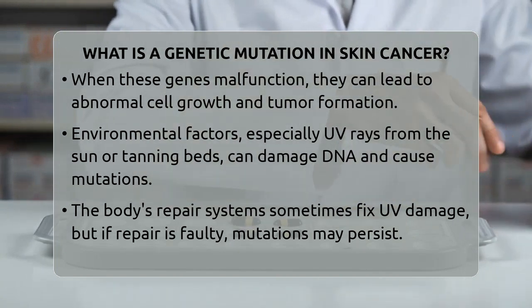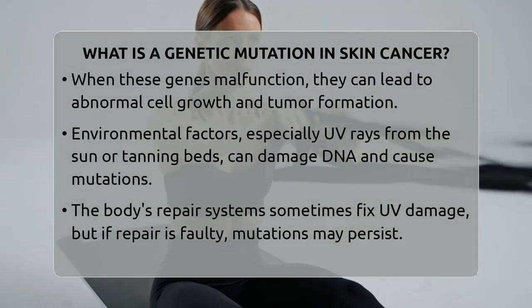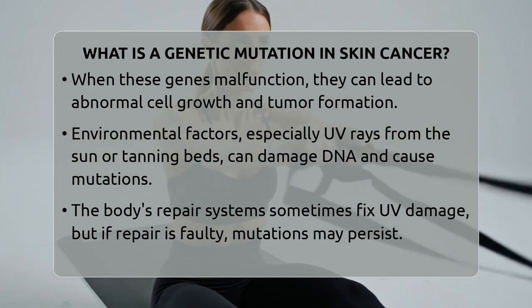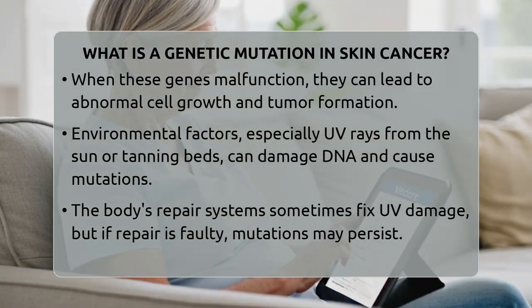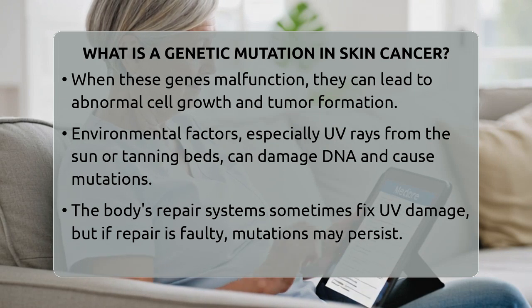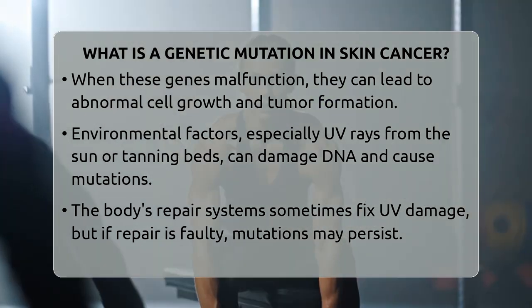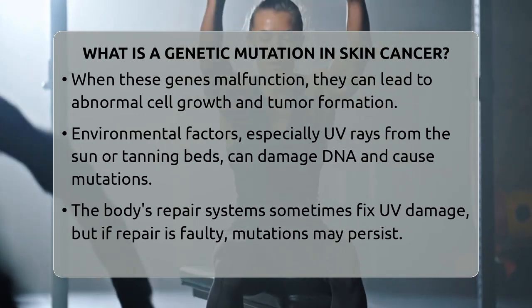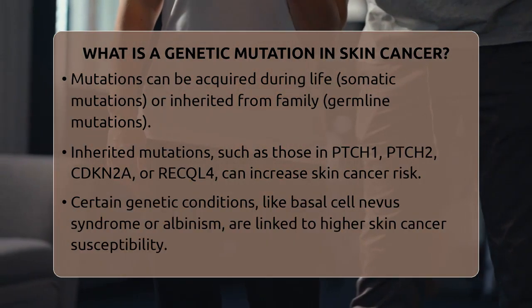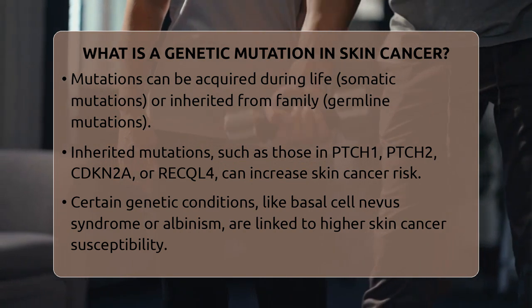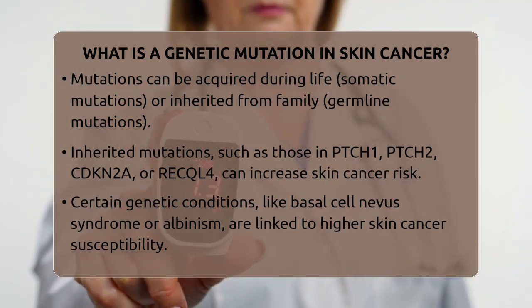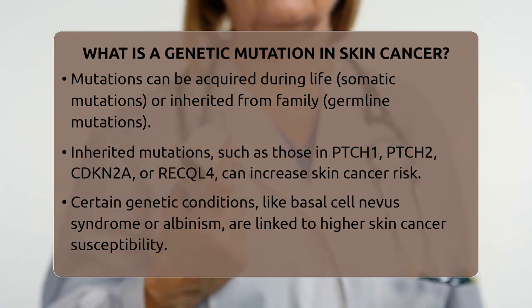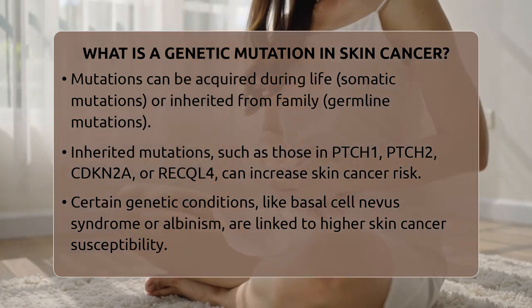Genetic mutations in skin cancer can be acquired, meaning they happen during a person's lifetime due to environmental exposures. These are called somatic mutations and are not inherited. On the other hand, some mutations are inherited from family members and are present in every cell from birth. These inherited mutations can increase a person's risk of developing skin cancer earlier or more frequently. Certain inherited conditions are linked to higher skin cancer risk.